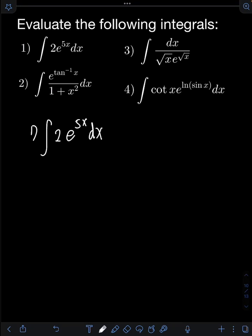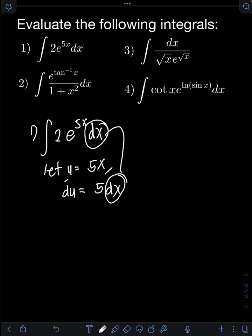We can apply u-substitution first. We let u be equal to 5x. Getting the derivative of both sides: du equals the derivative of 5x, which is 5 dx. We just need the dx term on the original integral, so we divide both sides by 5, giving us du over 5 equals dx.